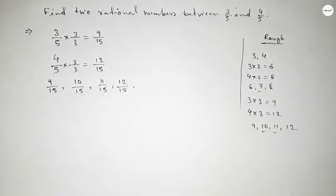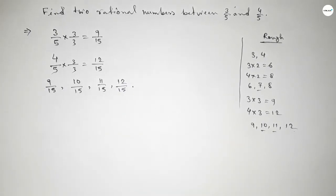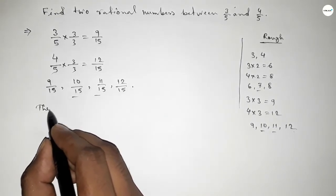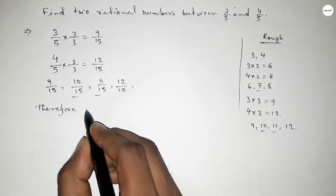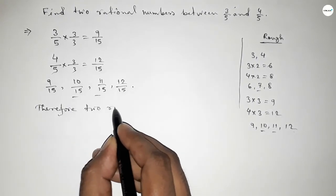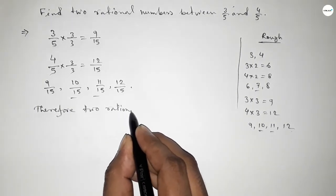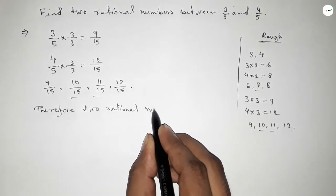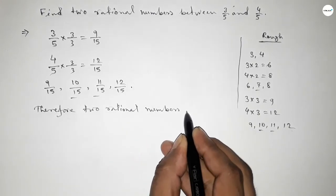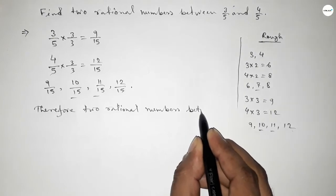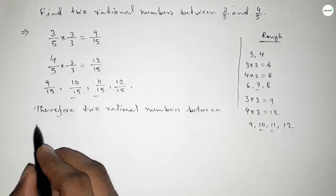These are the two required rational numbers between 3/5 and 4/5. Therefore, two rational numbers between 3/5 and 4/5 are...